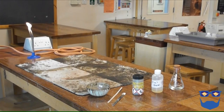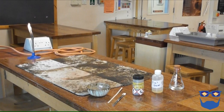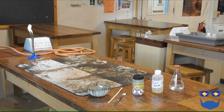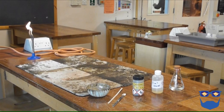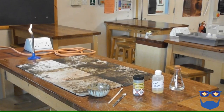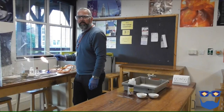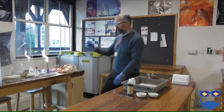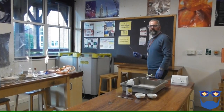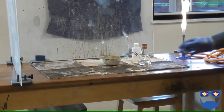Clear a work area. Put your heatproof mats down to protect the desk. Ask the students to move back — I try to have an empty desk between them and the demo. Put up your safety screens to protect you and them. Place your evaporating basin in the centre of the mats. Check your exit away from the experiment; I always walk it to ensure there are no obstacles.